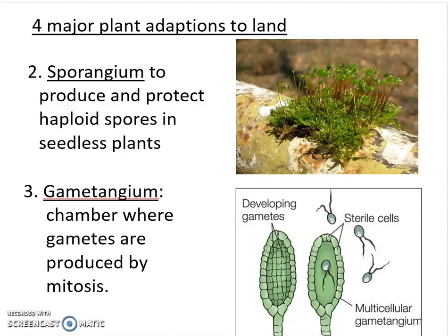As we look at this, you can see differences in male and female versions of these structures, where you can produce egg cells and sperm cells in specific locations on the plant and protect them. At this point, we're still tied to our algae that had cells produced with little flagella to allow them to swim — and that's not going to work in a terrestrial environment because you don't have all that liquid available.